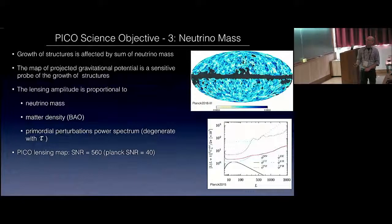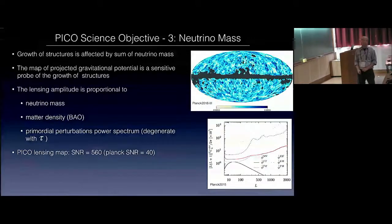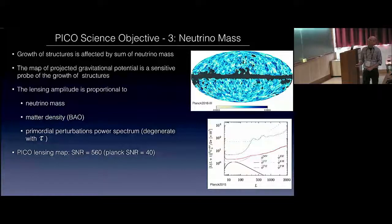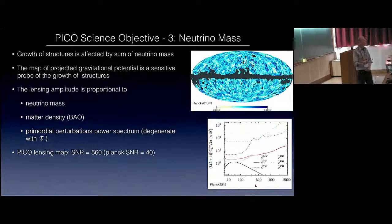Growth of structure is affected by the sum of neutrino masses, as has been discussed here before. The map of projected gravitational potential is a sensitive probe of the growth of structure. I'm showing here the projected lensing, the projected potential from Planck 2018. The lensing amplitude is proportional to the neutrino mass, the matter density that we hope will come from BAO, and the primordial perturbation power spectrum, which for the CMB is degenerate with tau.